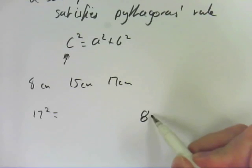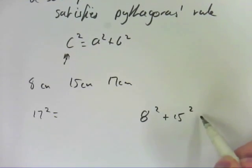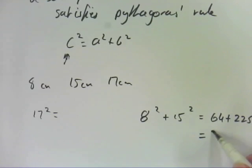And 8 squared plus 15 squared equals... If you work them both out on the calculator, so you get 64 plus 225 and that equals 289.